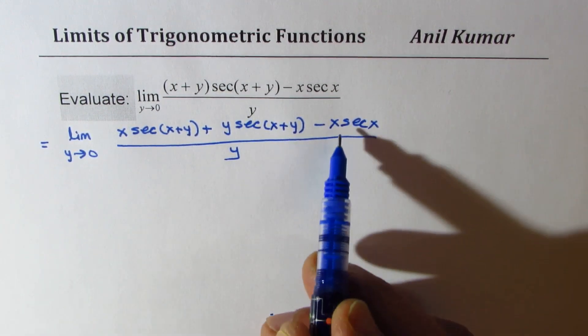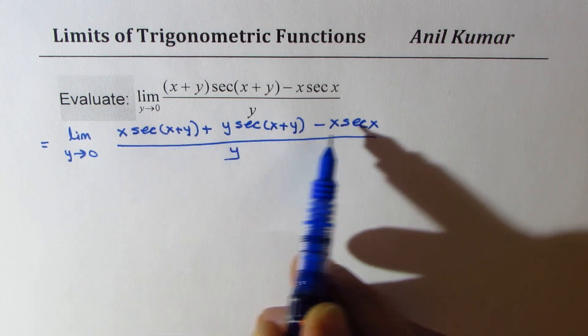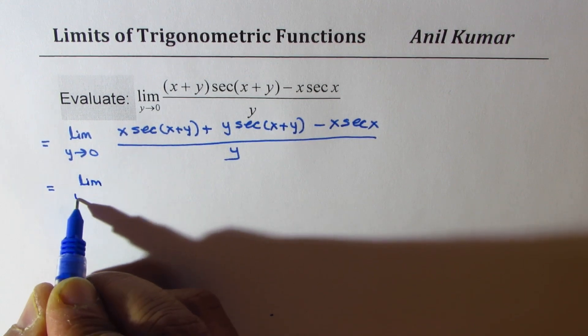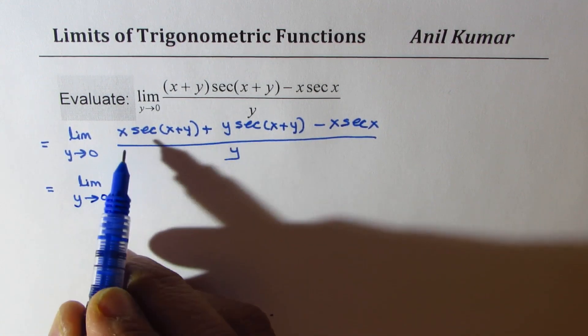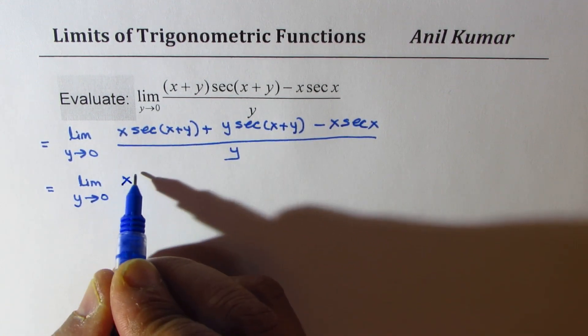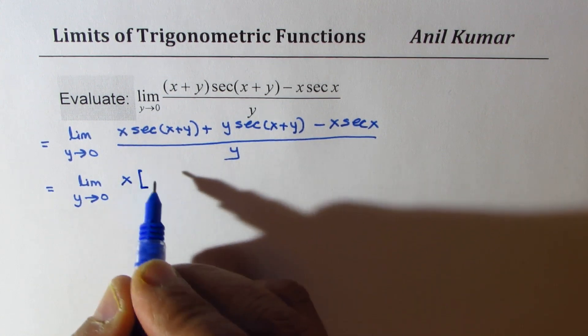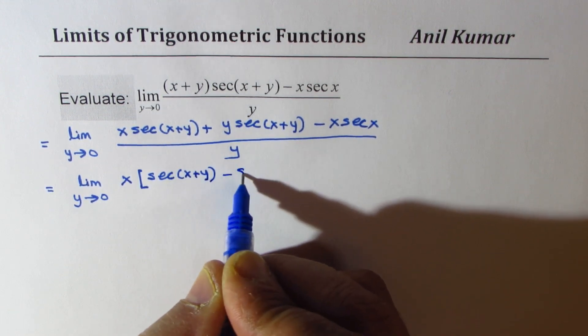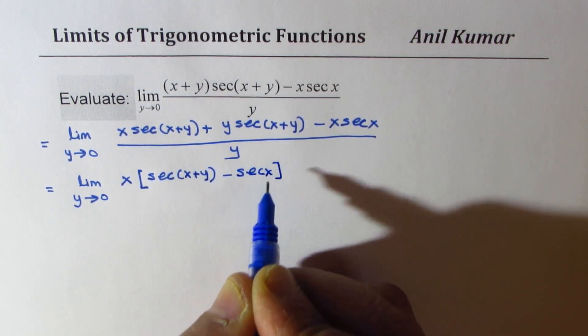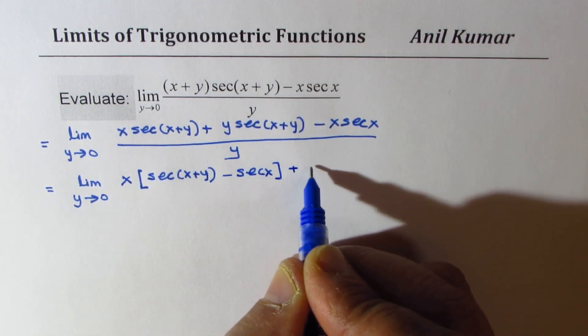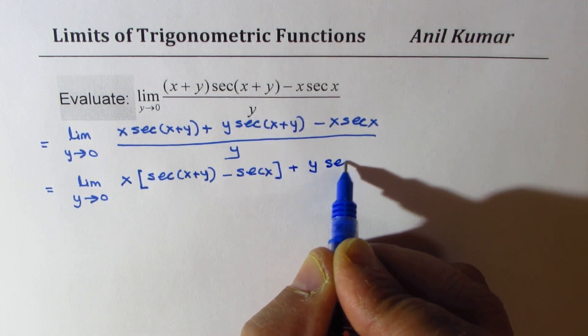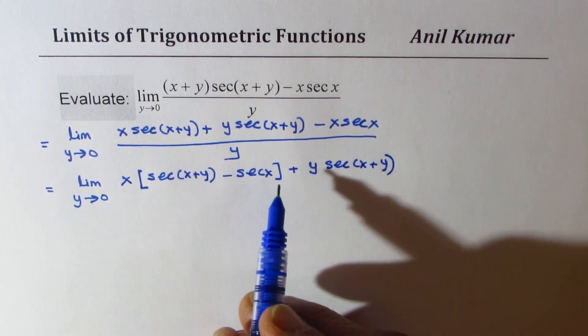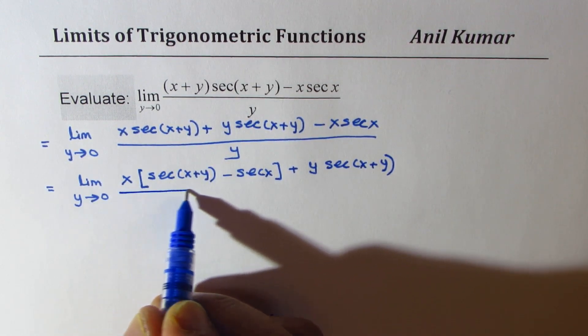Now you can combine these two terms so we could write this as limit y approaches 0, so x is common, so x we have secant x plus y minus secant x plus y secant x plus y. Well let's separate them into two different terms.